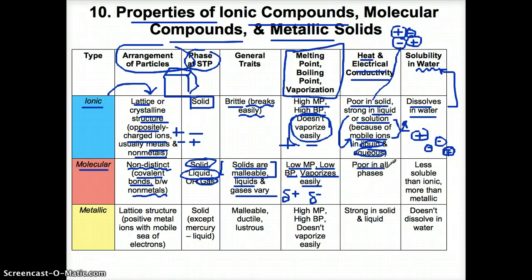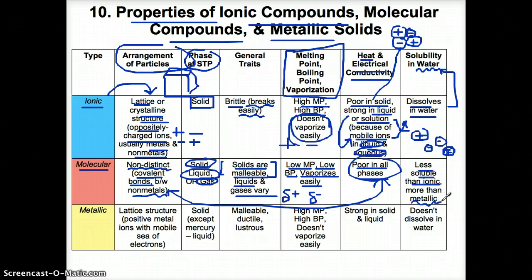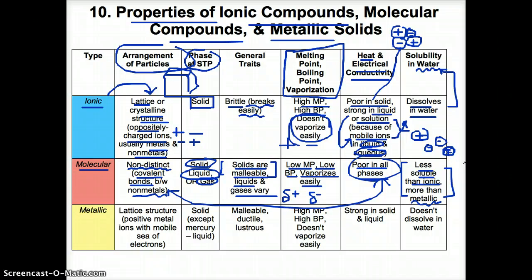Molecular compounds are poor electrical and heat conductors in all phases, and the reason for this is because they do not have moving charges — they only have neutral atoms. Since there are no charged particles, they cannot conduct electricity. Finally, molecular compounds are less soluble than ionic compounds are, but more soluble than metallic compounds. You'll learn later that nonpolar molecules cannot dissolve in water, while polar molecules can, but for now just know that molecular compounds are less soluble than ionic compounds but more soluble than metallic compounds.